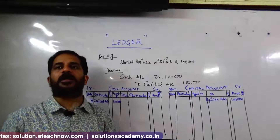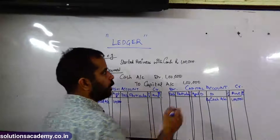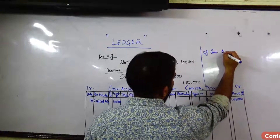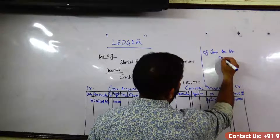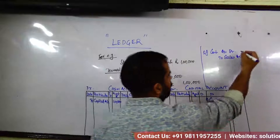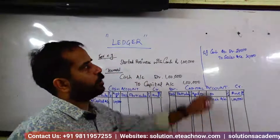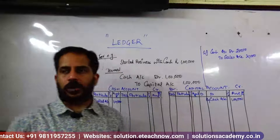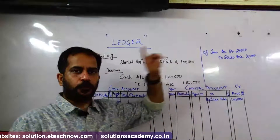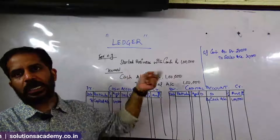If you have more journal entries, do you create a new account for every journal entry? No. For example: Cash account debit, To Sales account, 20,000. Now you have Cash account and Sales account involved. You already have a Cash account made — you do not make a new account. You post it in the existing account. But you will make a new Sales account.